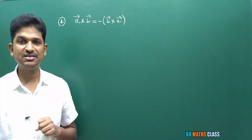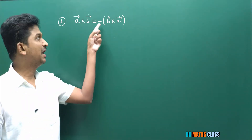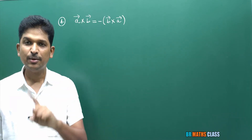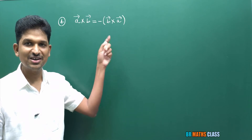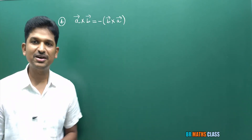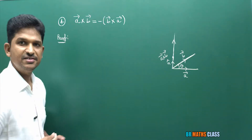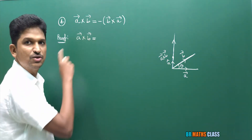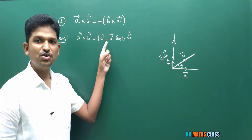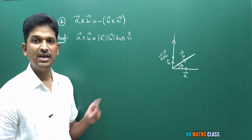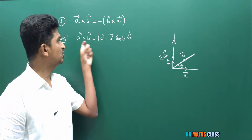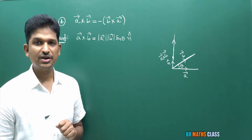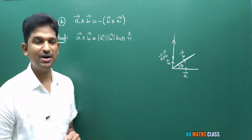A very very important result I am going to derive: a̅ cross b̅ = minus of b̅ cross a̅. In dot product, a̅ dot b̅ equals b̅ dot a̅, but in cross product, a̅ cross b̅ is not equal to b̅ cross a̅ — instead a̅ cross b̅ = minus of b̅ cross a̅. From the definition of cross product, a̅ cross b̅ = |a̅| |b̅| sine theta n̂, where n̂ is the unit vector such that a̅, b̅, n̂ forms a right-hand system.